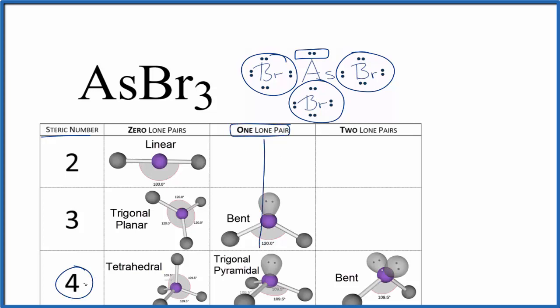Since we have one lone pair, we go down and over, and we have trigonal pyramidal as our molecular geometry for AsBr3. The ideal bond angle would be 109.5, although I would expect it to be less because of this lone pair here, which is more repulsive than these atoms.